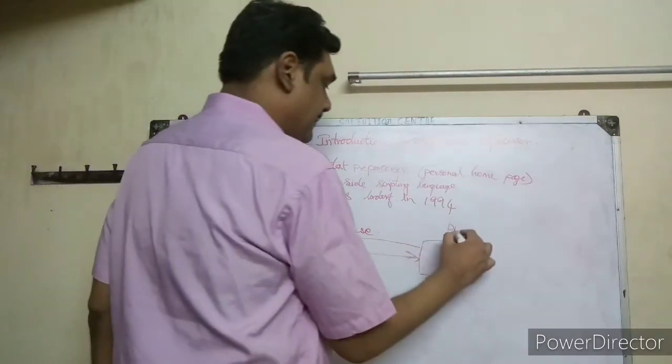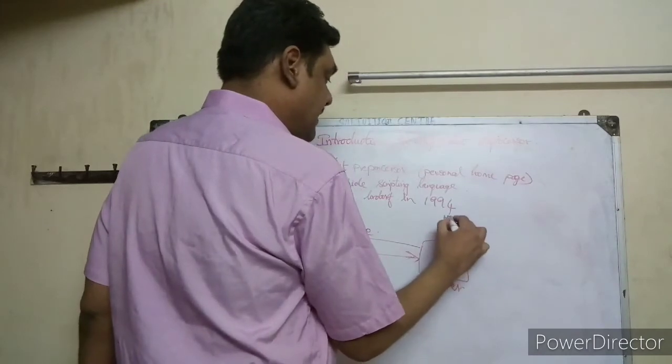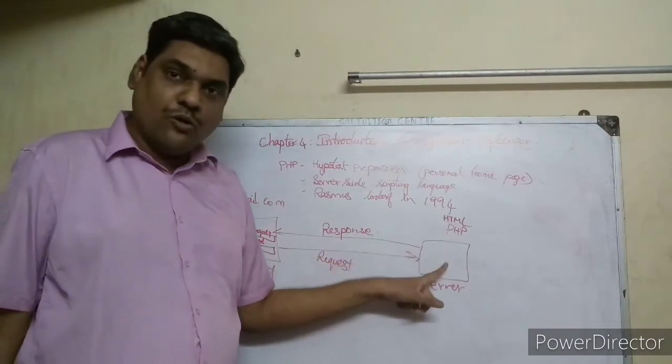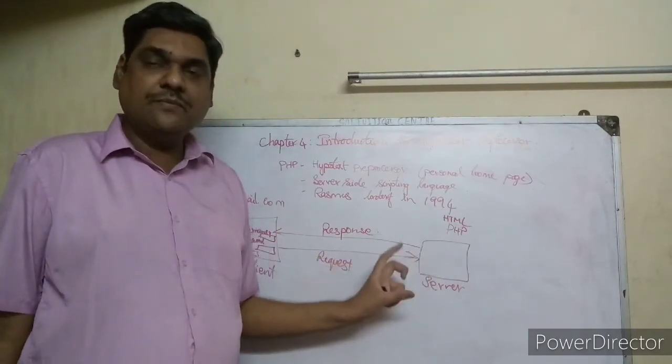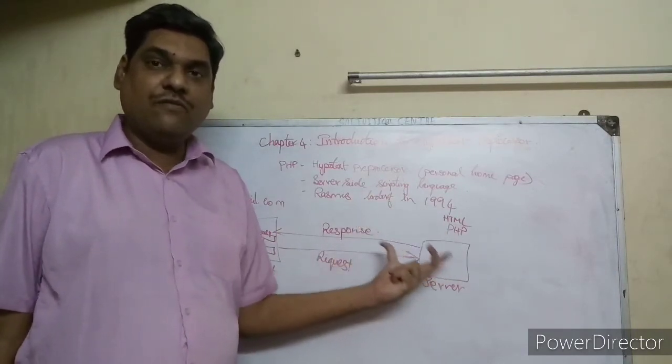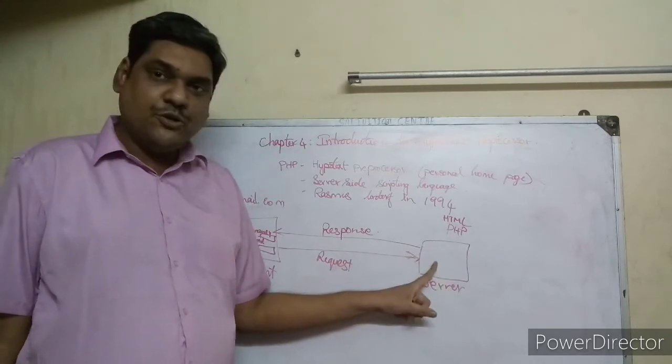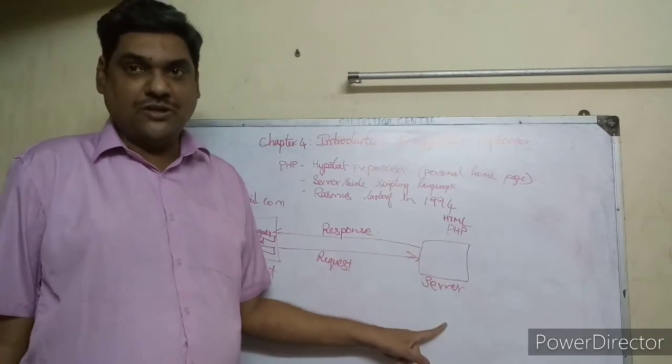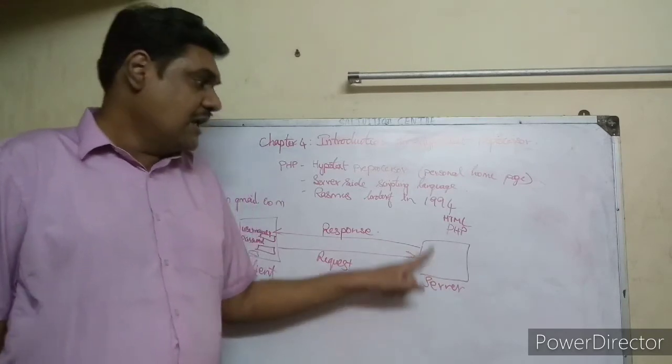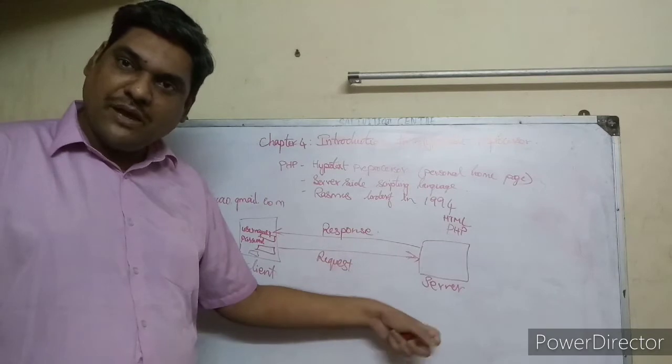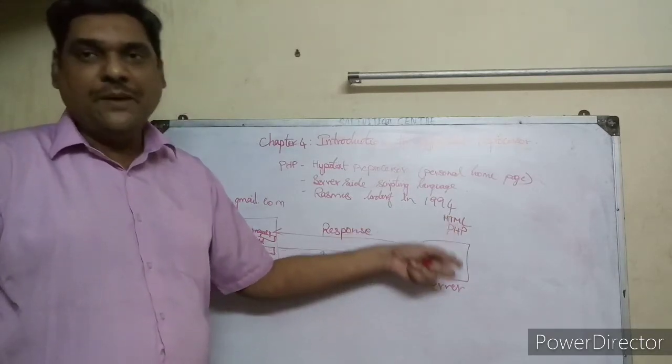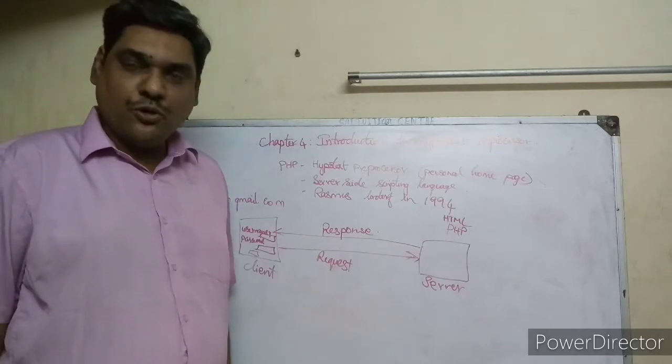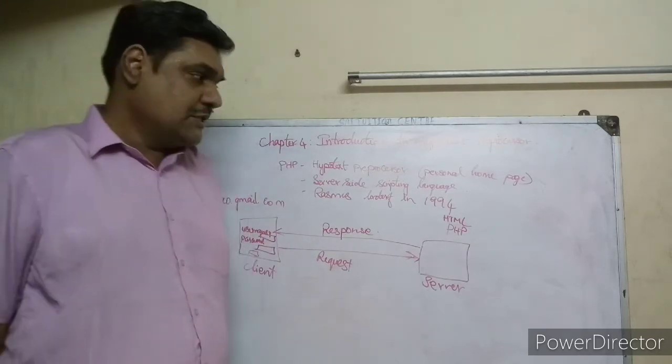The client-level username and password must match the database server's stored username and password. This checking process needs code to run automatically in computers. For this code we use PHP. The code with HTML plus PHP does the final level of validation. This validation happens on the server side, so it is called server-side validation. The language used for this validation is PHP, so PHP is called a server-side scripting language. Now you all understood, my dear children.